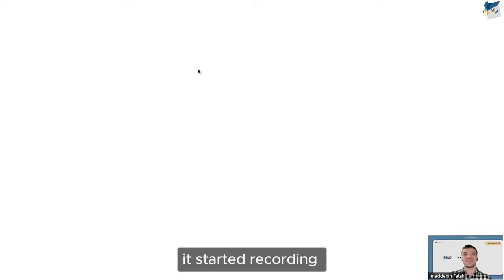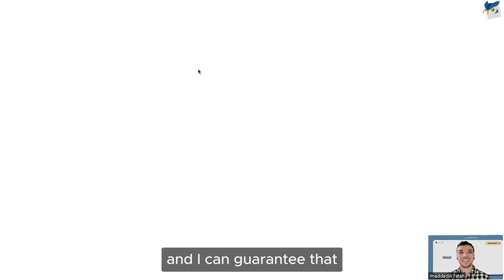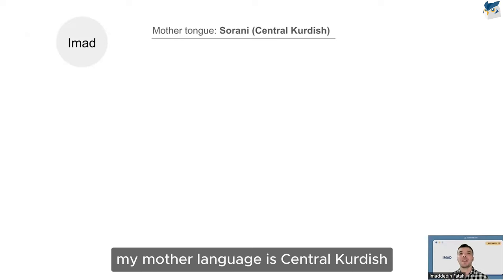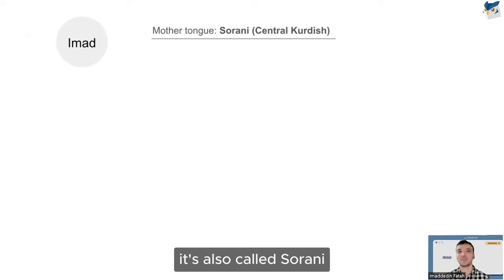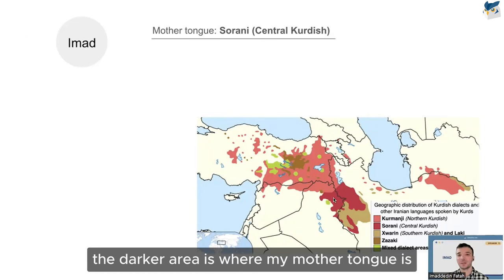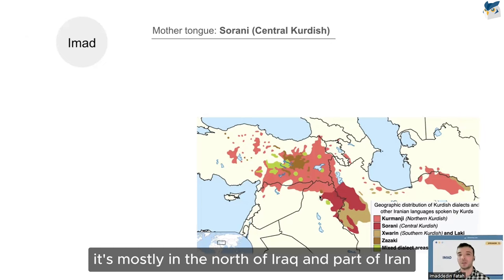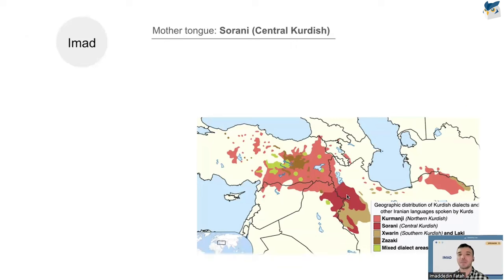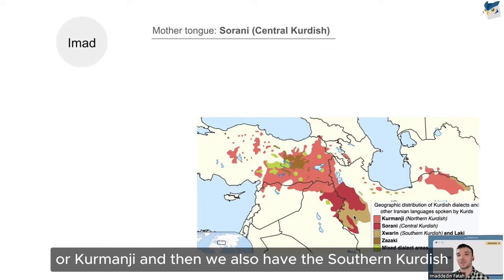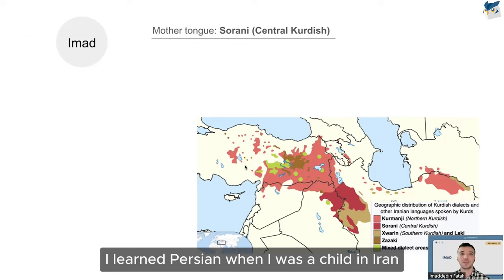I'm super excited to be here, thank you so much for joining. I can guarantee you will be learning something new today. My name is Imad. My mother language is Central Kurdish, also called Sorani. Looking at this map, the darker area shows where Central Kurdish is spoken — mostly in northern Iraq and part of Iran.